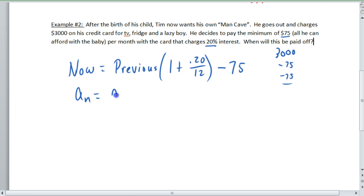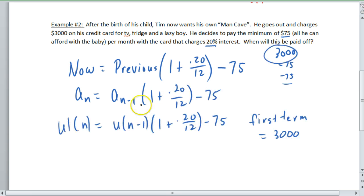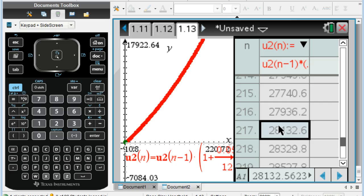So now it's going to be a sub n is equal to a sub n minus 1, times 1 plus, and I'll just pause this and write it out. So this would be in the math notation that we use, and then this would be in the recursive formula into the calculator that we're using. And then the first term is $3,000. So let's punch that in and see what happens.